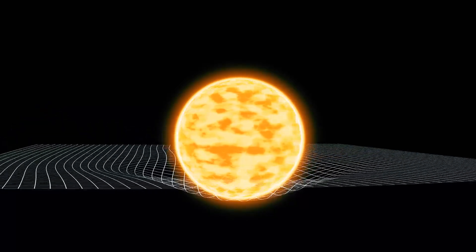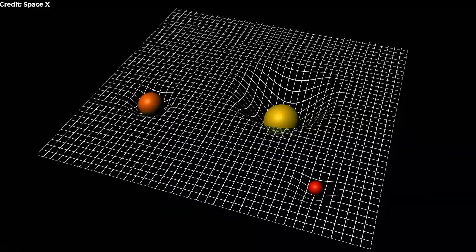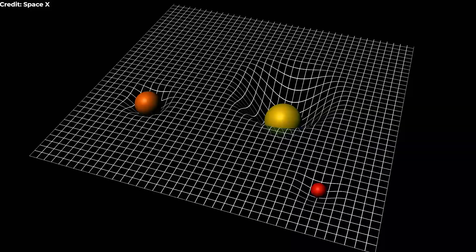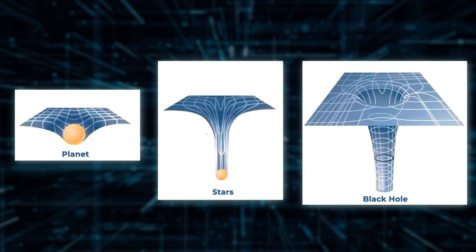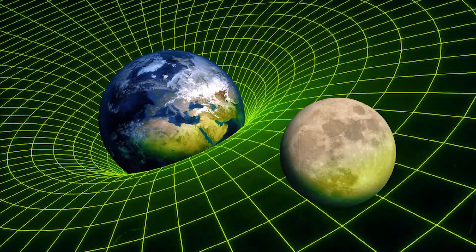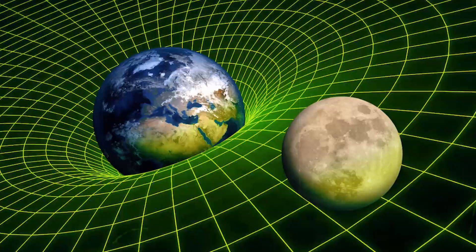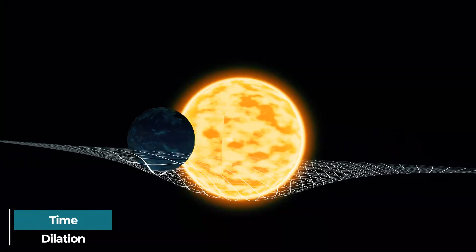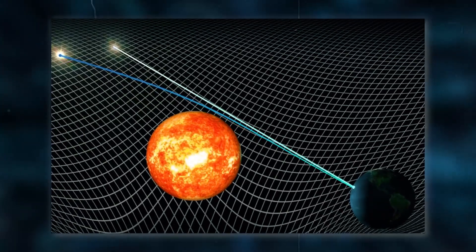This is due to the curvature of spacetime around massive objects like planets, stars, and black holes. As an object gets closer to a massive object, it experiences stronger gravity, which results in time dilation. The motion of light near big objects is greatly influenced by gravitational time dilation.